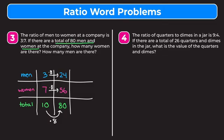We fill in what else they gave us: there's a total of 26 quarters and dimes, so we put 26 in the total row. How do we get from 13 to 26? 13 times 2 is 26, so we multiply both parts of our ratio by 2. Four times 2 gives us eight dimes, and nine times 2 gives us 18 quarters. So there are 18 quarters and eight dimes in the jar.